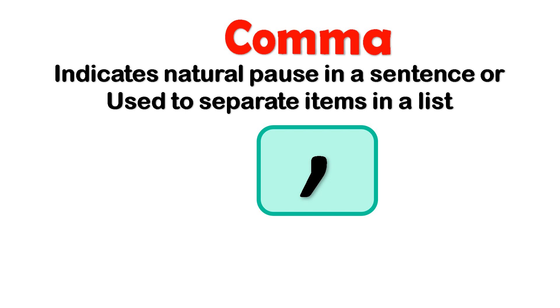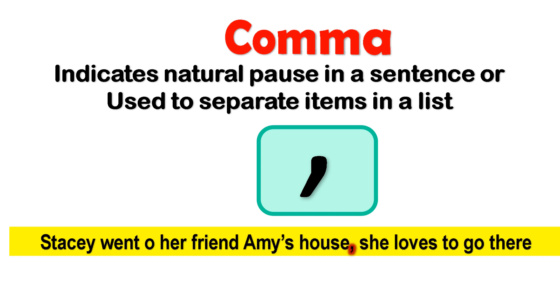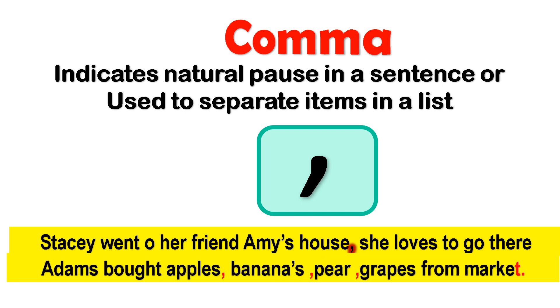For example, Stacy went to her friend Amy's house, she loves to go there. This sentence shows us where a comma can be used to create a natural pause in a sentence.